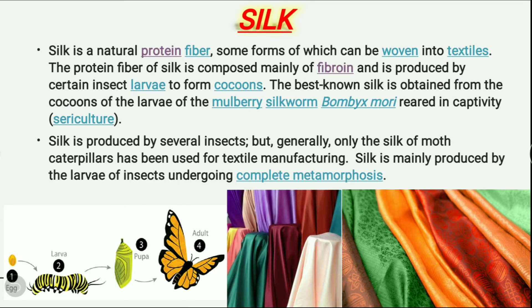Silk is a natural protein fiber, some forms of which can be woven into textiles. The protein fiber of silk is composed mainly of fibroin and is produced by certain insect larvae to form cocoons. The best known silk is obtained from cocoons of the larvae of the mulberry silkworm, Bombyx mori, reared in captivity. This process is called sericulture.